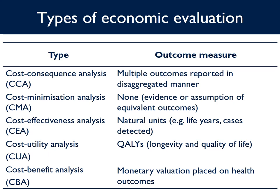The next type is cost-effectiveness analysis, which measures health outcomes in natural units and calculates an incremental cost-effectiveness ratio, such as cost per life year gained or cost per additional case detected. In cost-utility analysis, multiple outcomes are combined into a single metric such as the quality-adjusted life year, or QALY. A notable advantage of this approach is that it permits comparisons across diverse disease areas and encompasses both length and quality of life.